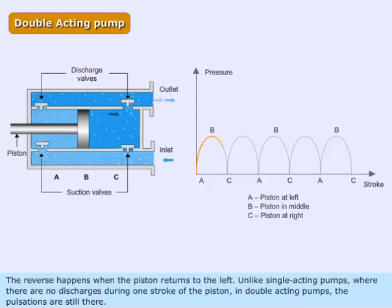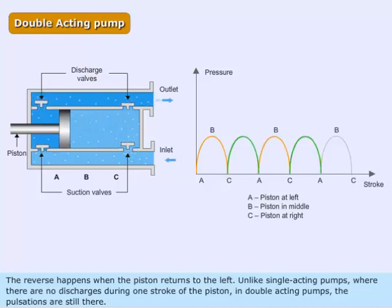The reverse happens when the piston returns to the left. Unlike single acting pumps, where there are no discharges during one stroke of the piston, in double acting pumps, the pulsations are still there.